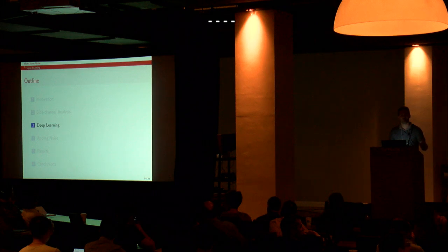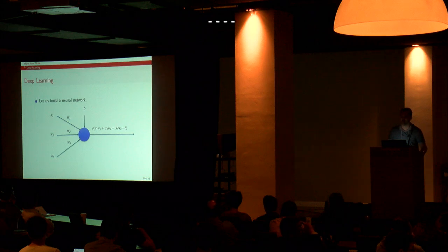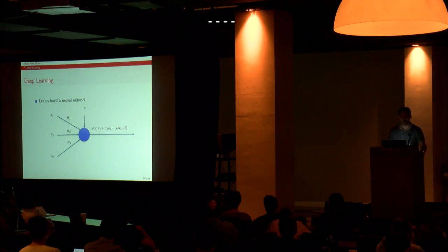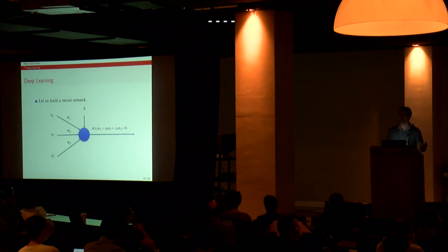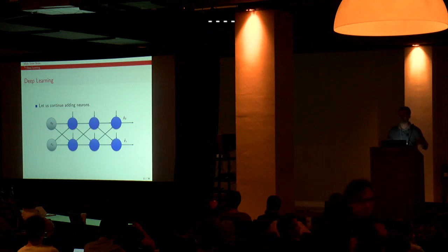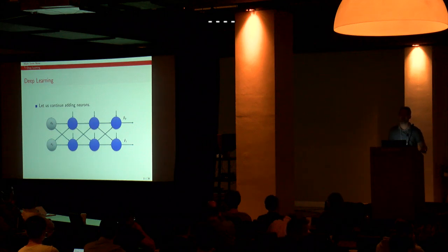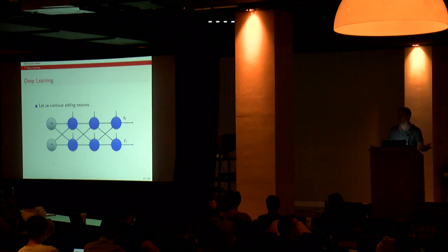A little bit about deep learning. We start with a neuron — a perceptron. There will be some inputs, some weights, some function that combines them: we sum everything, multiply the weights and the inputs, add some bias term, and obtain some value. With just one neuron we cannot do a lot. So let's add more neurons — many layers of those neurons. This is called a multi-layer perceptron, and this is already deep learning.